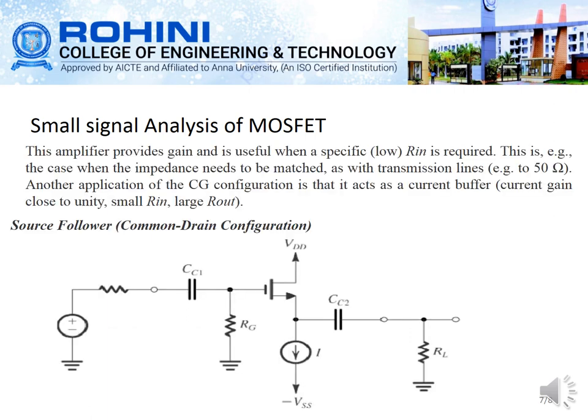In the small signal analysis of the MOSFET, this common gate amplifier provides gain and is very useful when a specific input resistance is required. When impedance matching is needed — for example in transmission lines matched to 50 ohms — this applies. Another application of the common gate configuration is as a current buffer, where the current gain is very close to one.